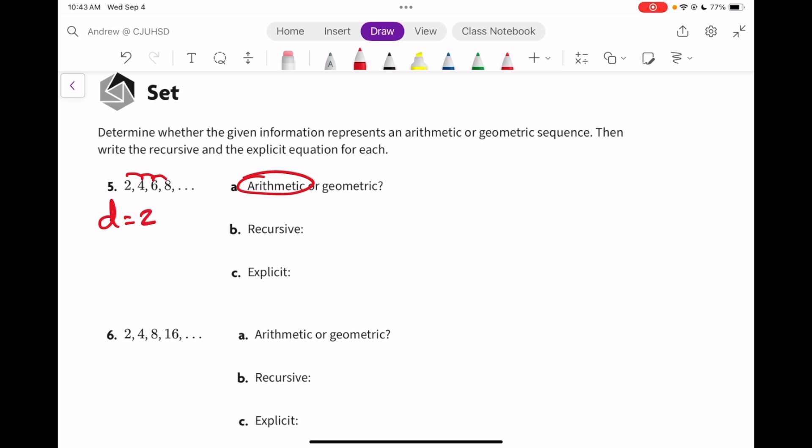To do the recursive, we say where does it start? It starts at 2. And then what do you do to the previous to get the next one? You add 2, so previous plus 2. The explicit would be f(n) is the first number, 2, plus the common difference, 2, times n minus 1.